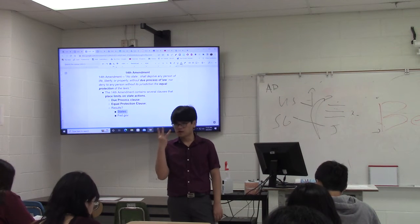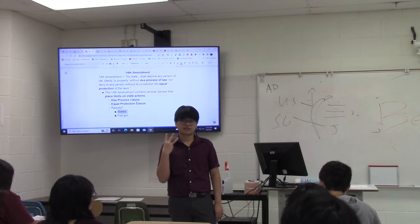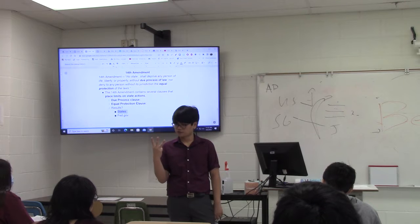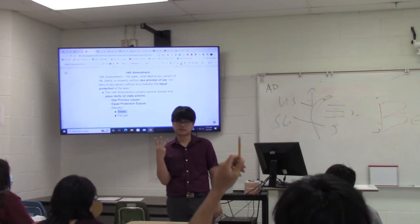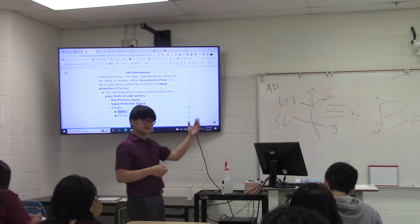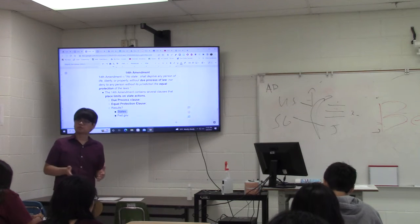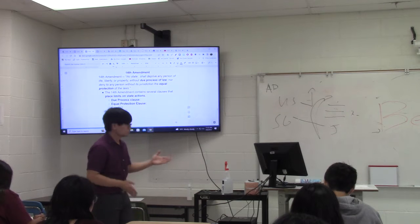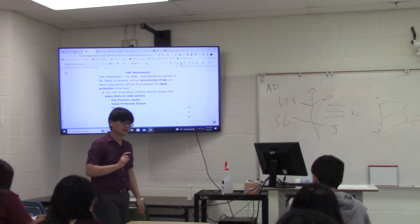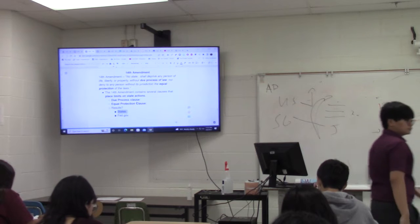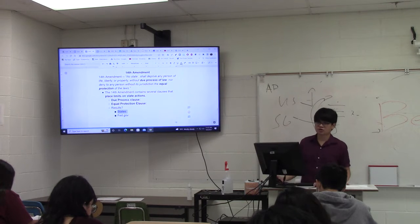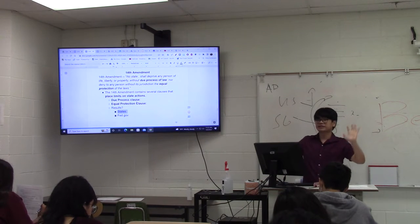Which part of the national government holds state governments accountable for violating your liberties or discriminating against people? The judicial branch. Whenever Texas passes a law that might be against the Bill of Rights or might be discriminatory, the judicial branch can come in and say that law is unconstitutional — it violates these two clauses of the 14th Amendment. So the judicial branch is especially important in holding state governments accountable today. This redefined the relationship, making the U.S. government more powerful and limiting state power.